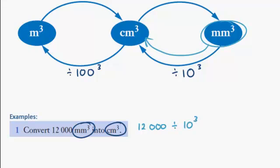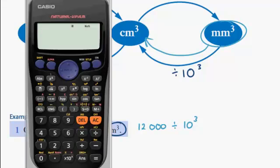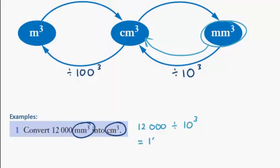Okay, at that point there, you need to get out your calculator. On your calculator, type in 12,000. Divide by 10 to the power of 3. Press equals and you get 12. So your answer is 12 centimeters cubed.